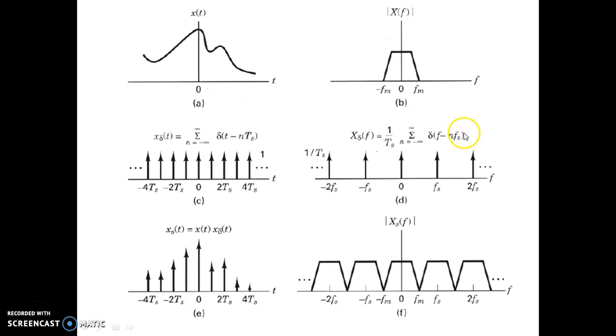It is a delta function, and each impulse is spaced by nfs. n can take on values 1, 2, 3, or even negative—it can take only integer values. You can see the spacing between each impulse is fs.